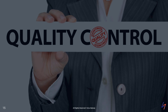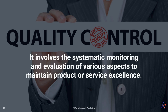Now let's turn to quality control. Quality control is about verifying that our deliverables meet the specified quality requirements — it's a more hands-on, inspection-based approach. It involves the systematic monitoring and evaluation of various aspects of our construction work to maintain product or service excellence, checking our work against quality standards and making corrective actions when necessary. In construction, QC activities happen throughout the project, from checking the quality of incoming materials to inspecting completed work, ensuring that our final product meets all quality specifications and stakeholder expectations.